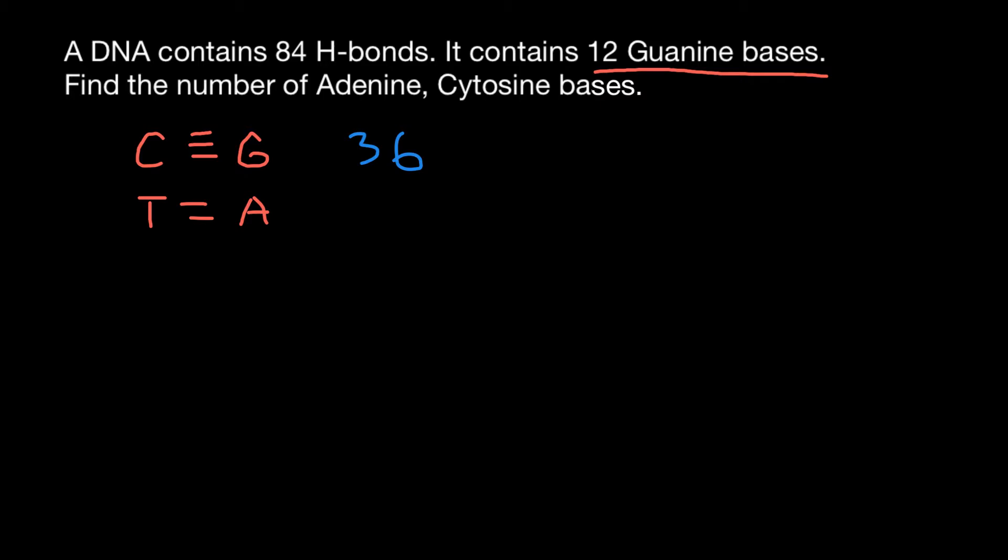And we know the total number of hydrogen bonds in this double-stranded DNA is 84. So we can say that this is going to be 84 minus 36. So the number of hydrogen bonds between thymine and adenine would be 48.